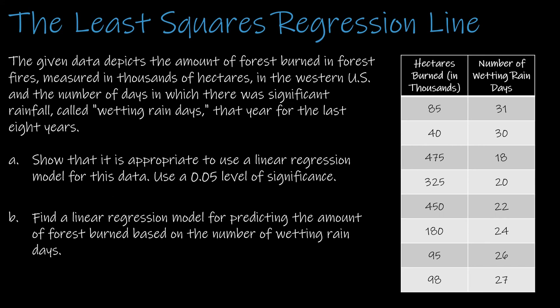This is a question I would like for you to try on your own. The data set that I've given you gives you the amount of forest burned in hectares in thousands in the Western US and the number of days in which there was significant rainfall which they call wetting rain days. It's eight years of data. The first thing is to show that it's appropriate to use a linear regression model and then we need to find the model that we could use to predict the amount of forest burned based on the number of wetting rain days. I would like for you to try that on your own and when you're ready press play to see how you did.